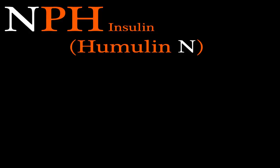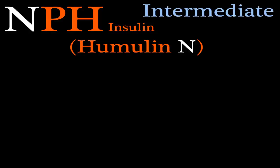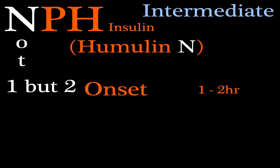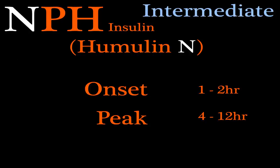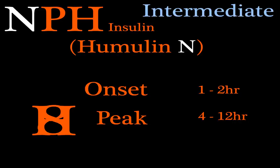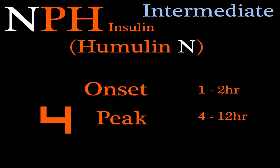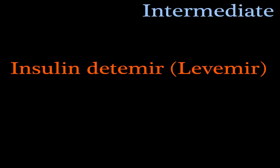NPH insulin is intermediate acting — this is Humulin N. The N stands for 'not only one but two,' so the onset is one to two hours. P is for peak, so remember four to twelve — the peak is four to twelve hours. For duration, look at the H: if you connect the H it looks like an 8, giving 18; look again and it becomes a 4, so duration is 18 to 24 hours.